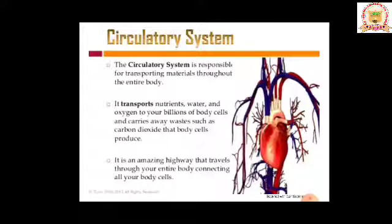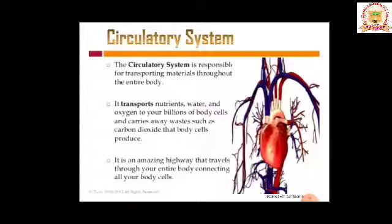The circulatory system is responsible for transporting materials throughout the entire body. Due to this transport system, it transports oxygen, water, food, and hormones internally. It also transports nutrients and water and oxygen to our billions of body cells, and carries away waste such as carbon dioxide that body cells produce.